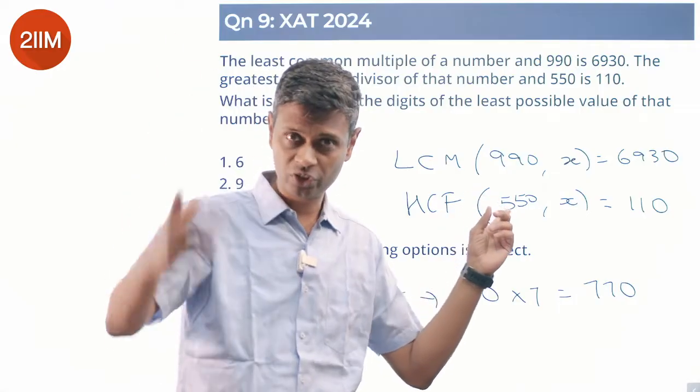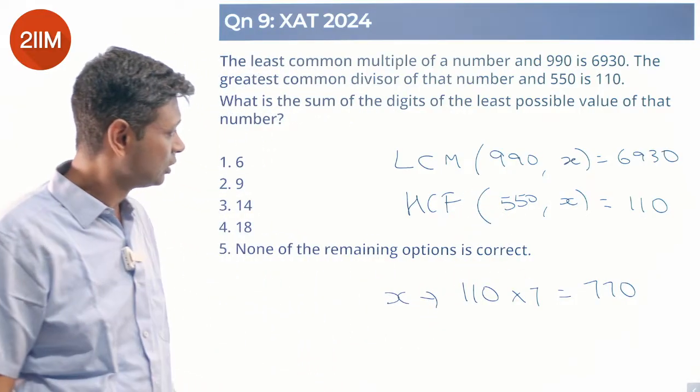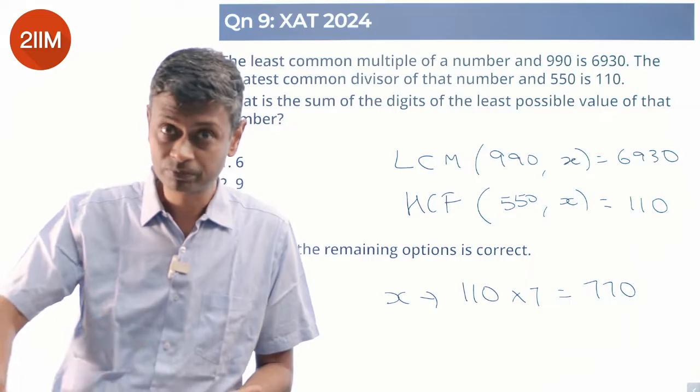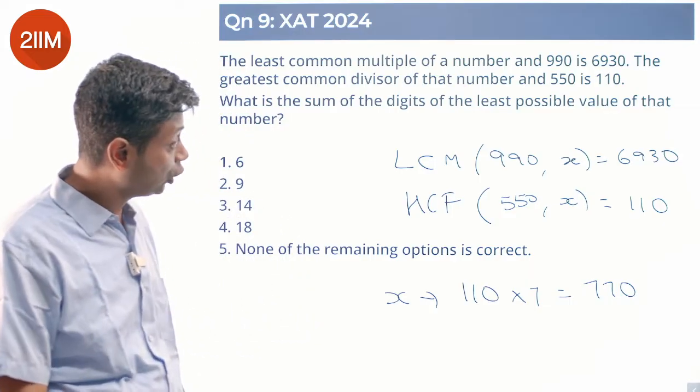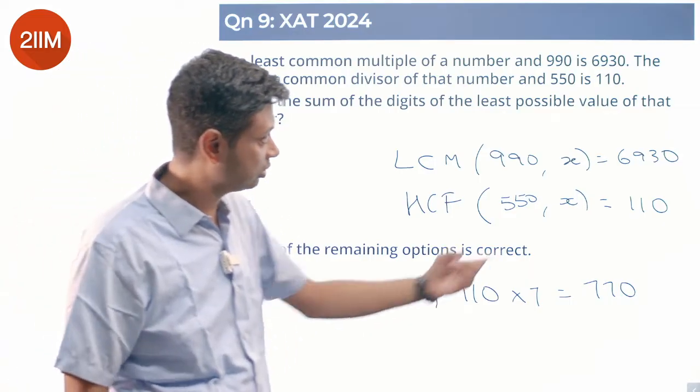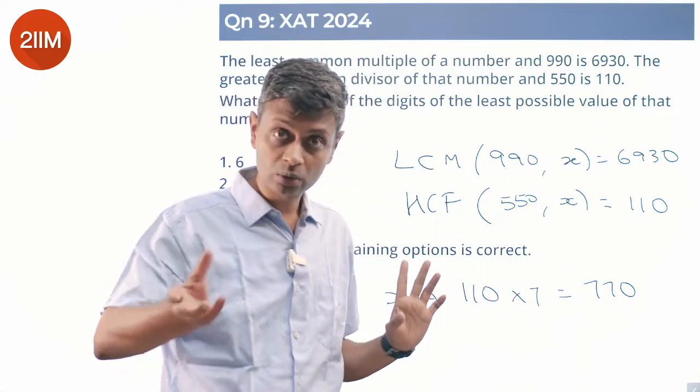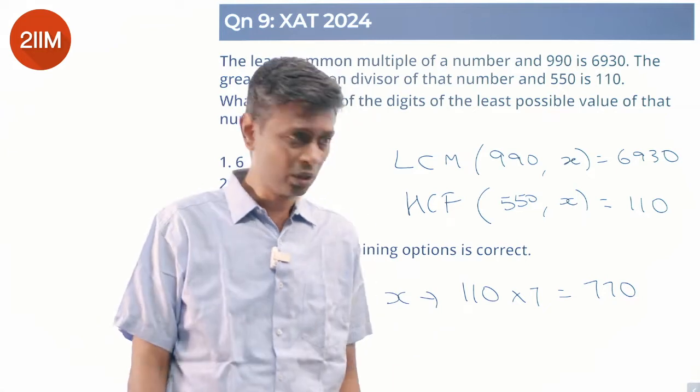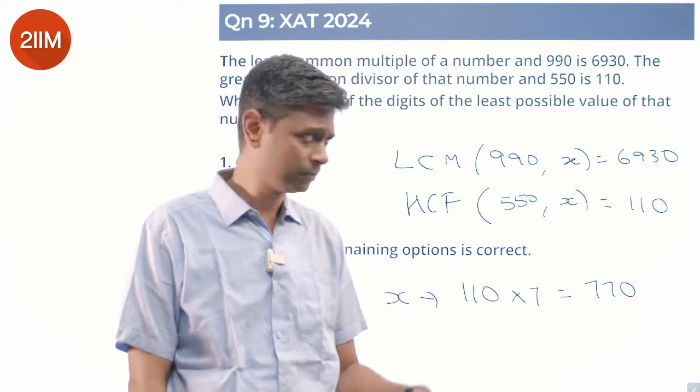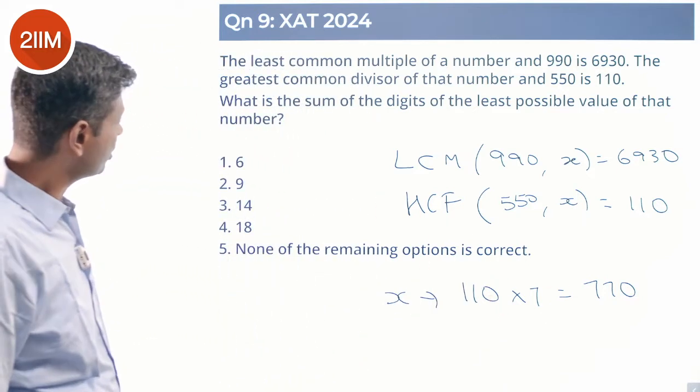Because then the HCF will increase. So it's 770 times something. Maybe 770 times 3 could work. That should be a factor of 6930, and 770 times 3 will sit inside that. Maybe that could work, but it definitely has to have 770. What is the sum of the digits of the least possible value of that number?